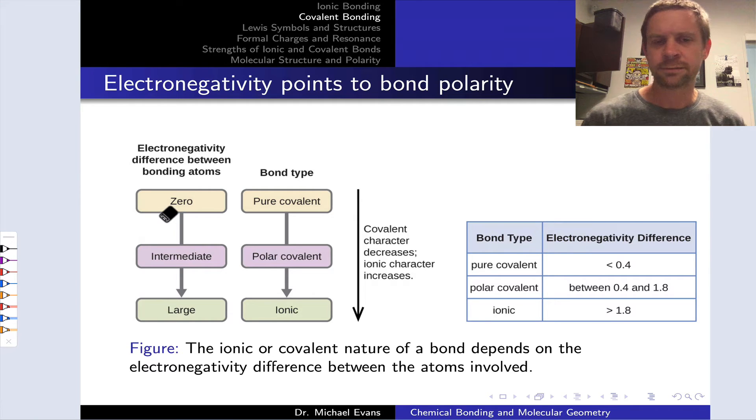What does electronegativity have to do with bond polarity? Well, the greater the electronegativity of an atom, the more strongly it attracts electrons to itself, and the greater the electron density around that atom in a bond with an atom that is less electronegative than the one in question.